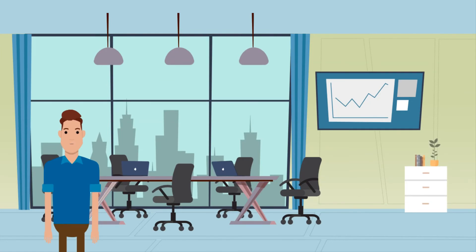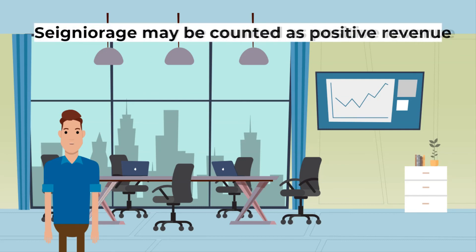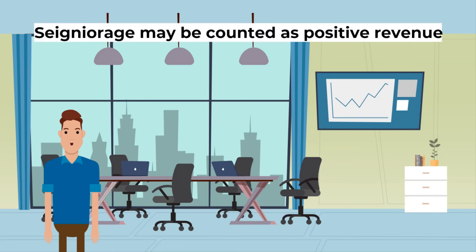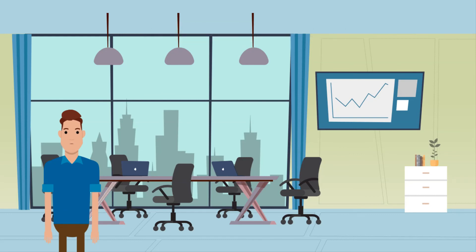What are the key takeaways from this? Seigniorage is the difference in face value of money, such as a 25-cent quarter coin, and the cost to produce it. Seigniorage may be counted as positive revenue for a government when the money it creates is worth more than it costs to produce. In some situations, the production of currency can result in a loss instead of a gain for the government creating the currency, for example, producing copper pennies.